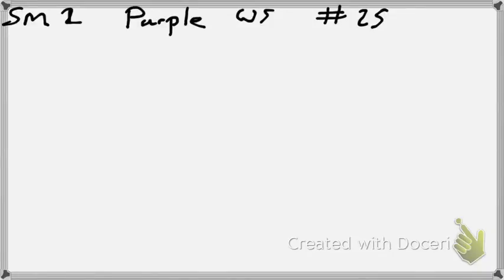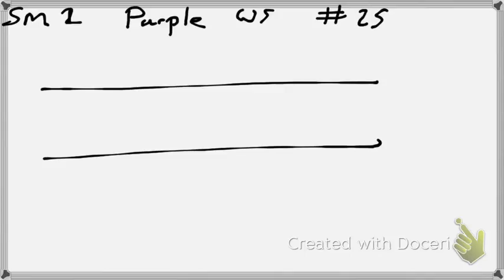So on 25, it says we have two lines cut by a transversal. On your paper, are those two lines parallel? How do you know, Mr. Clunker? On number 25, look at your paper, how do you know that those two lines are parallel? No, just because there are arrows.